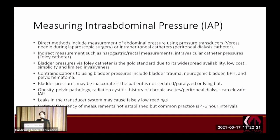You cannot use bladder pressure to estimate intra-abdominal pressure if there is something wrong with the bladder, such as bladder trauma, neurogenic bladder, benign prostatic hyperplasia, or pelvic hematoma. Intra-abdominal pressure measurements are also inaccurate if the abdominal muscles are contracting or if there is external pressure on the abdomen. Conditions like obesity, pregnancy, radiation, cystitis, and peritoneal dialysis can chronically elevate intra-abdominal pressure. Additionally, the transducer must be set up correctly — any leak in the system can cause falsely low readings.